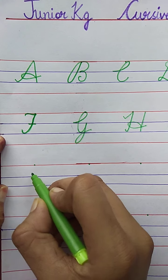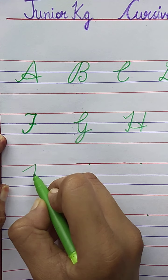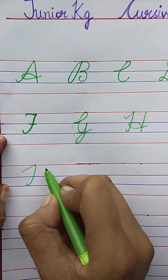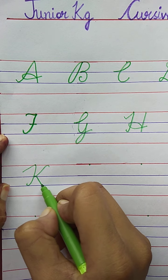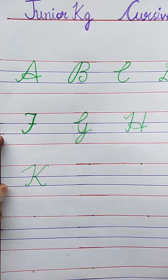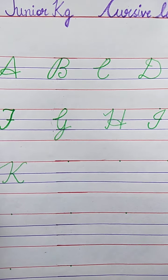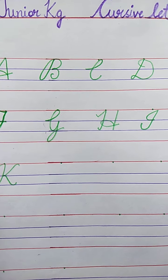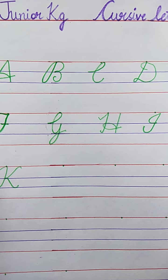K. K for Kite. Draw with me. K for Kite. Very good. The spelling of Kite is K-I-T-E. Kite.